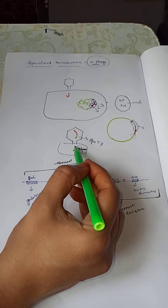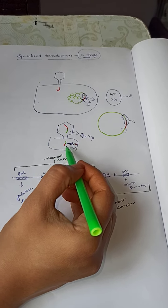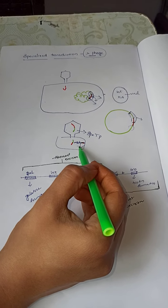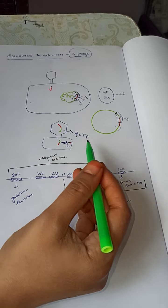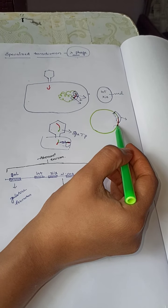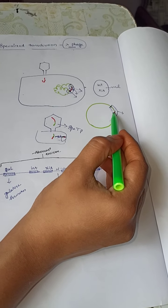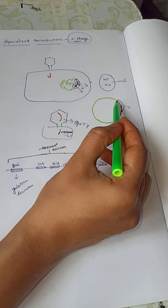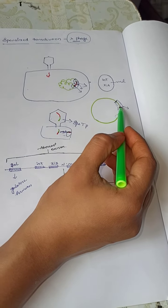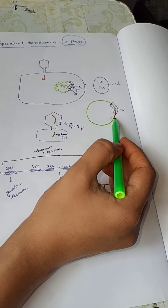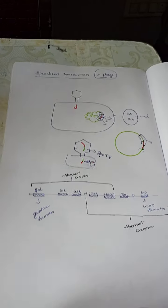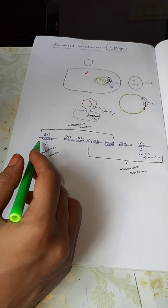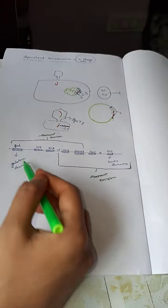This new bacterial cell which has received the DNA molecule does not have the ability to produce viral progeny. This is because you are not getting the whole viral genome — only a partial viral genome portion and a partial bacterial genome portion — so you do not have all the genes required for the production of new viral progeny.